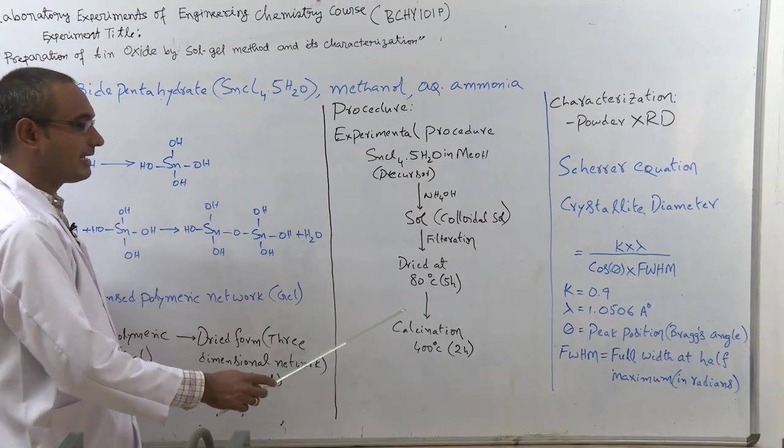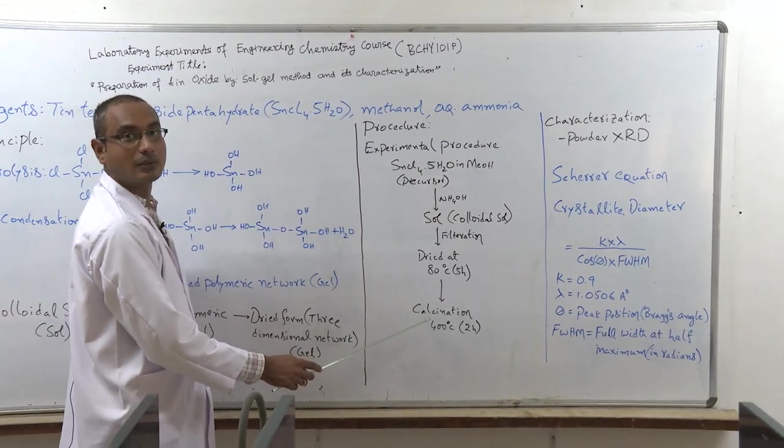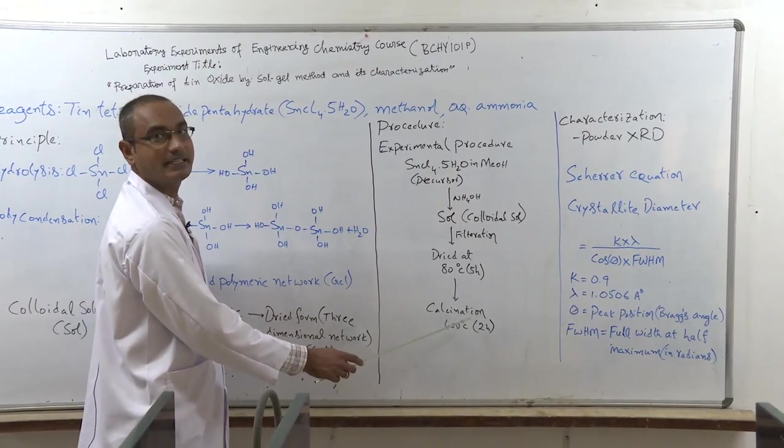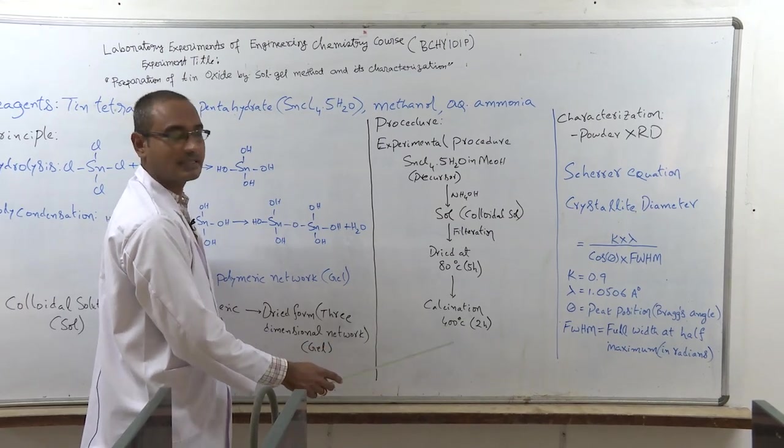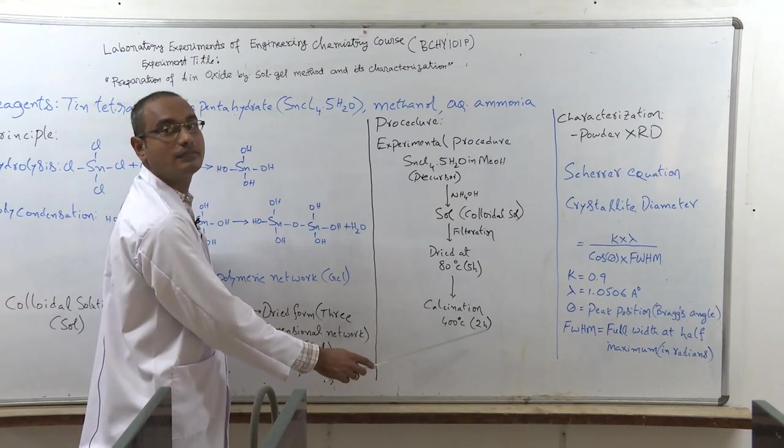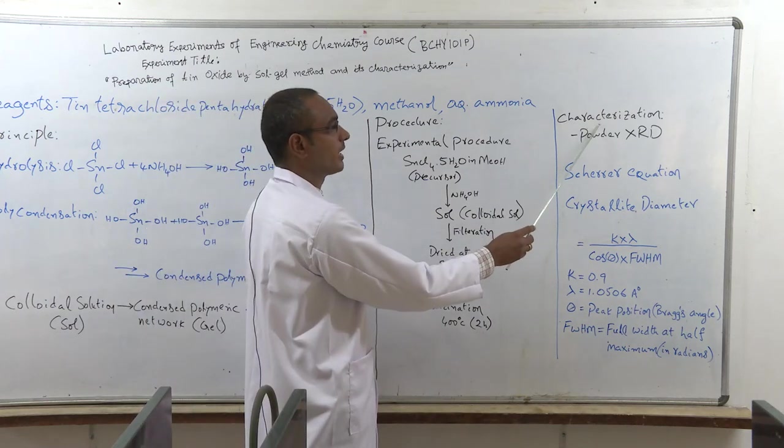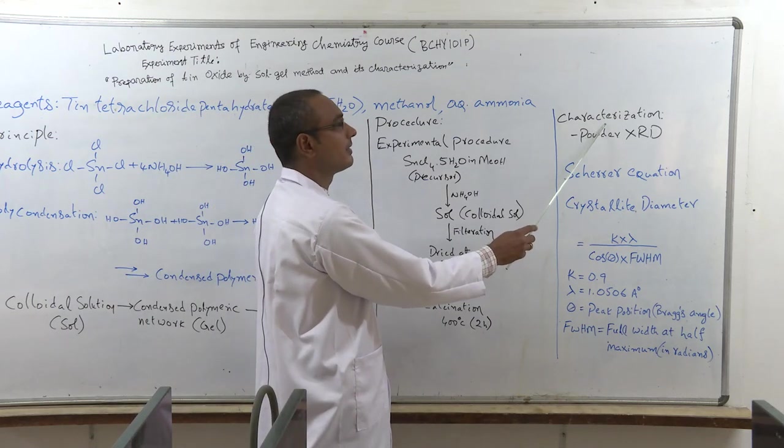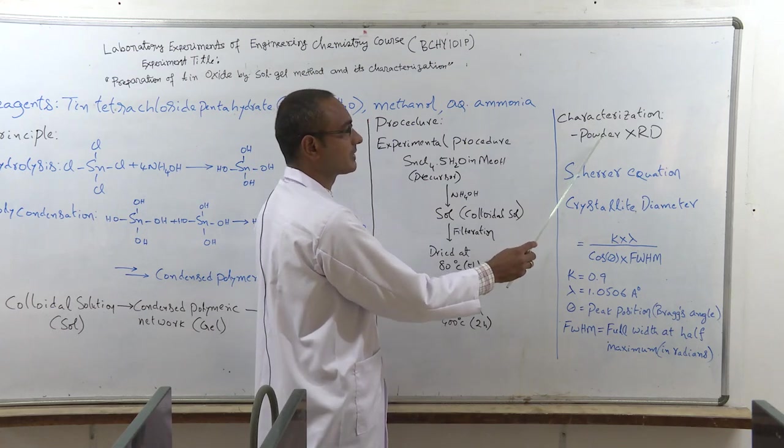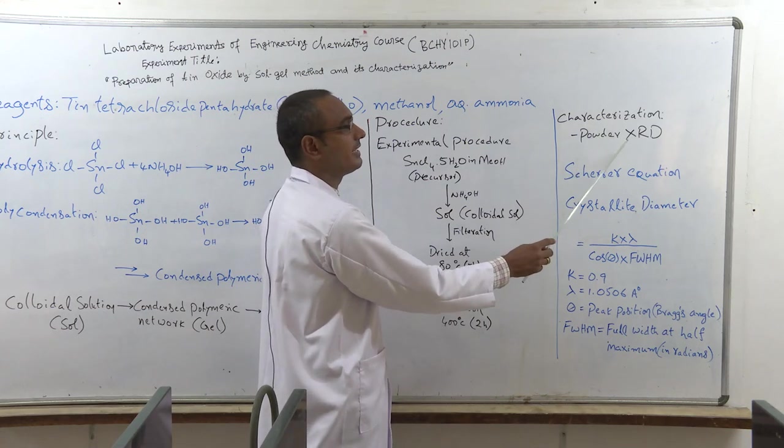And that material was dried at 80 degrees centigrade in hot air oven for five hours. After that, the material is grinded and taken in silica crucible and calcinated in muffle furnace at 400 degrees centigrade for two hours. Once the material is in our hand, then we are going to characterize the tin oxide nanoparticles using powder XRD technique.